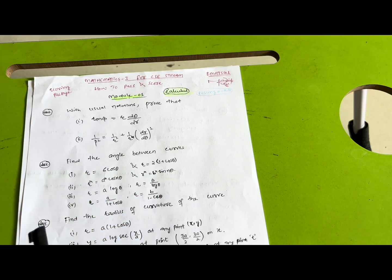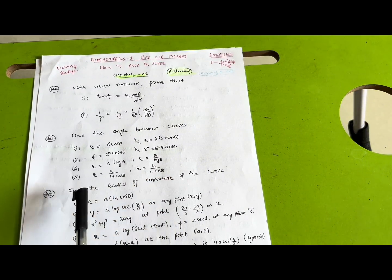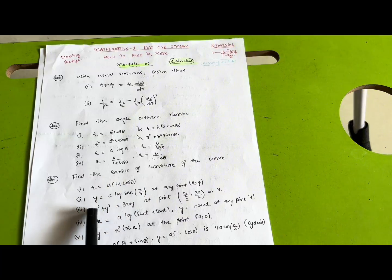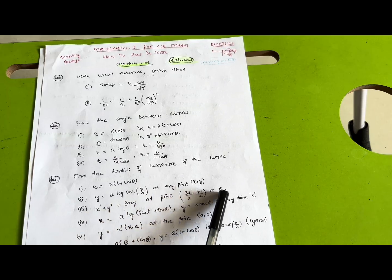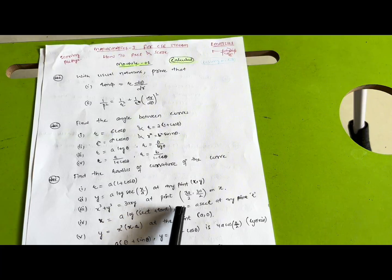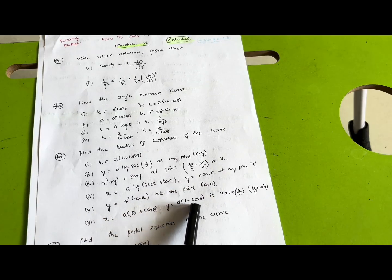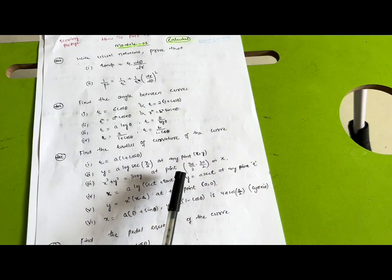Next, find the radius of curvature — a very important concept. You have to go through six problems: r = a(1 + cosθ), y = a log(sec(x/a)) at any point (x, y), x³ + y³ = 3axy at point (3a/2, 3a/2), x = a log(sec t + tan t) and y = a sec t at any point t, y = x³(x − a) at point (a, 0), and x = a(θ + sinθ), y = a(1 − cosθ) — the cycloid problem where the radius of curvature is 4a cos(θ/2).